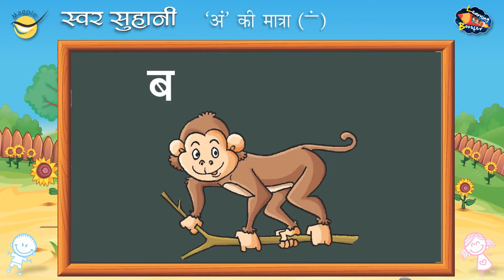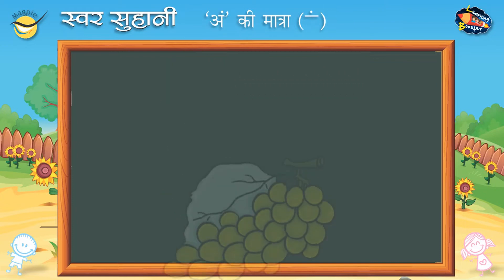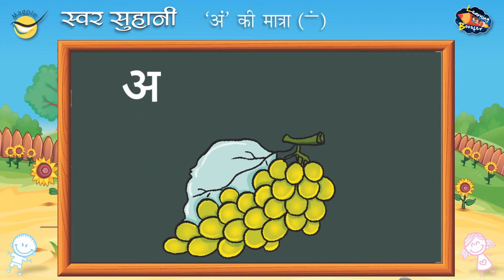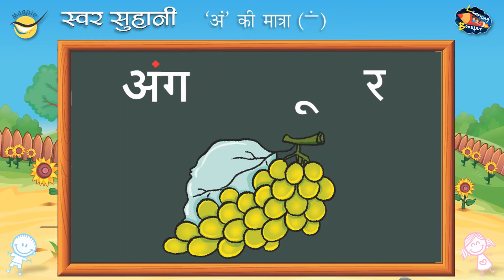ब — अंग की मात्रा। द — ग — बड़े उक। र — अंगूर।